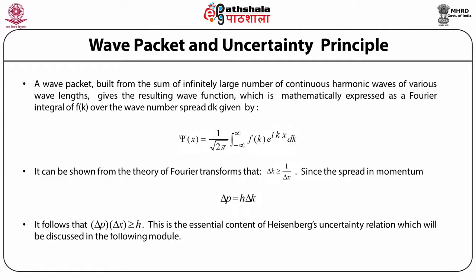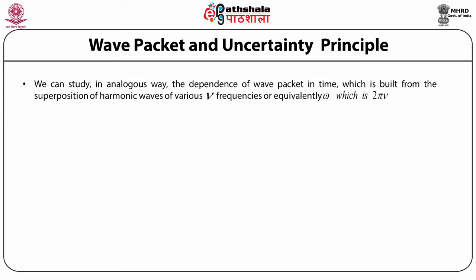Using these equations — delta k ≥ 1/delta_x and delta p = h_bar · delta k — we can write the final expression as delta p · delta x ≥ h_bar. This is essentially the first form of Heisenberg's uncertainty relation, which involves momentum and position, stating that it is impossible to simultaneously determine the exact position and the exact momentum of a particle, with the uncertainty in simultaneous determination being greater than or equal to h_bar, where h_bar = h/2pi and h is Planck's constant.